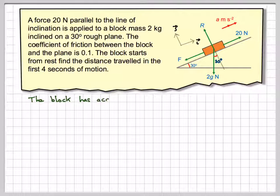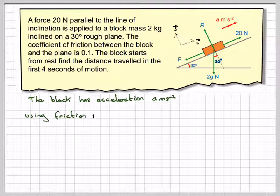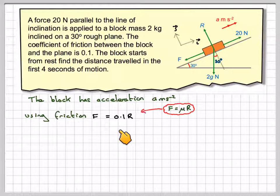The block has an acceleration of a metres per second squared, which we really need to find before we can find the distance. So using friction, f equals 0.1 times r, using this idea that f equals mu times r, the resultant.